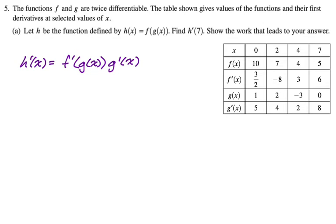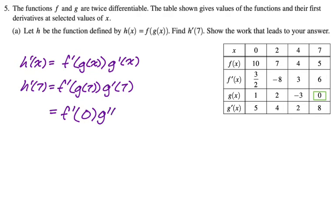Now we need to evaluate this at seven. I think it's a really good idea to show a step where you are just subbing it in. So h'(7) = f'(g(7))g'(7). I like that because then I can know what I've done wrong when I think I've done something wrong. I need to figure out g(7), which you can see is zero in the table. So really, we're going to have f'(0) times g'(7). Now in the table, we just need to find f'(0) and g'(7). So f'(0) is going to be 3/2 and g'(7) is going to be 8. So we're going to get 3/2 times 8, which you can leave, but I'm going to simplify to 12.